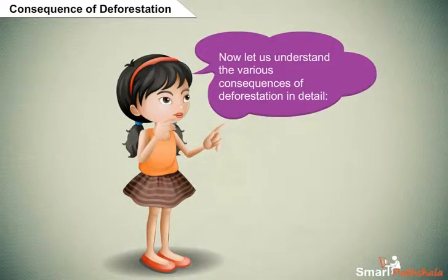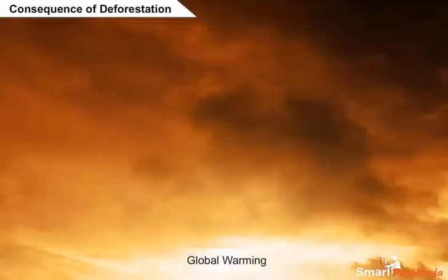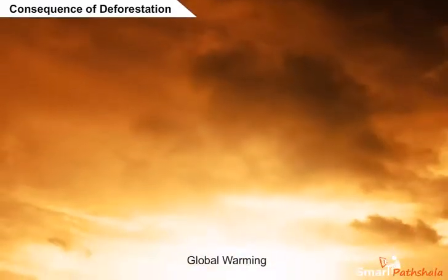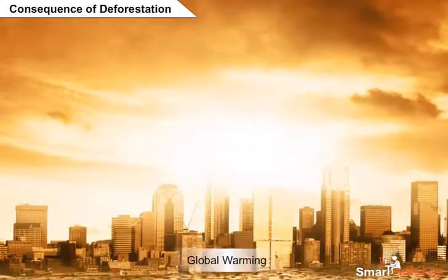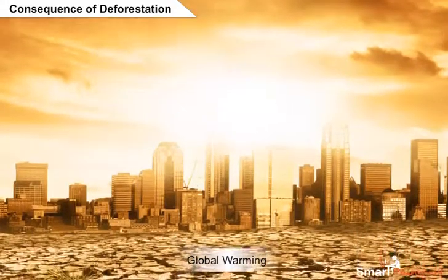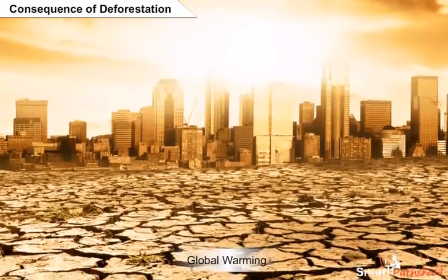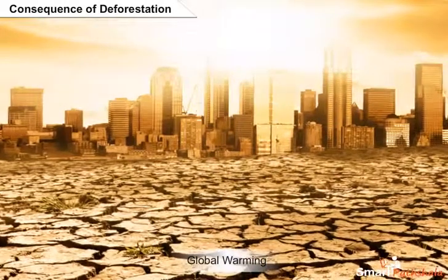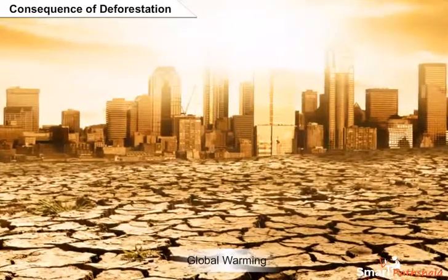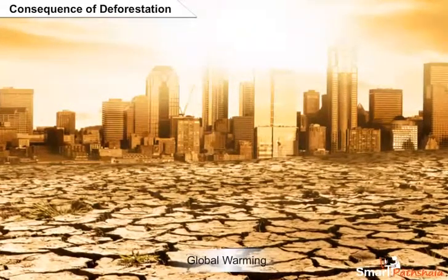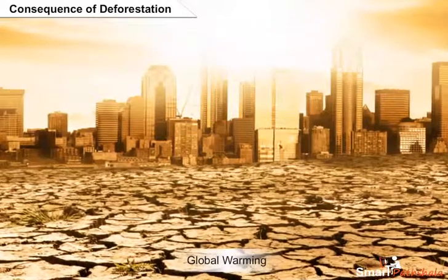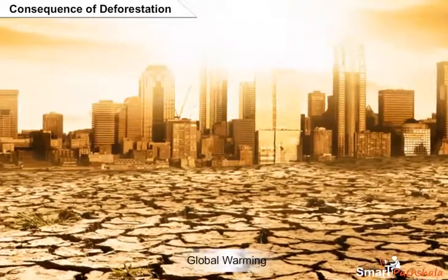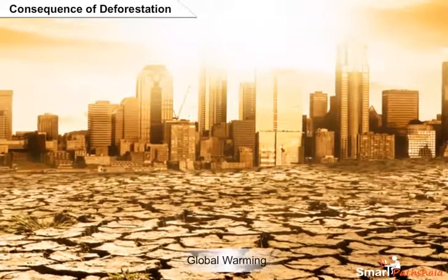Let us understand the various consequences of deforestation in detail. Plants take in carbon dioxide from the atmosphere and release oxygen. If forests are cut, the number of trees decreases, leading to increased carbon dioxide levels in the atmosphere. Carbon dioxide traps heat rays reflected by the earth, causing the temperature to rise, which results in global warming.